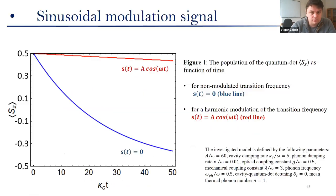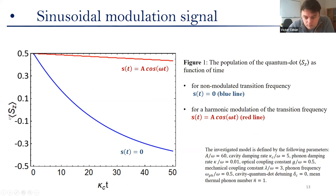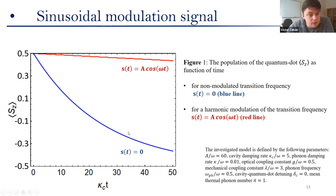One of the first investigations is to validate whether the control and slowdown of the spontaneous emission occurs. We look at the population of the quantum dot for two cases. In the red line, we see the quantum dot with the transition frequency modulated by a pure sinusoidal signal, and we compare it to the case with no modulation at all. We see a clear enhancement of the lifetime of the excited population of the quantum dot — it is kept longer in the excited state.